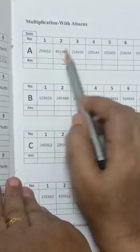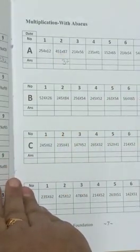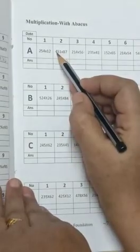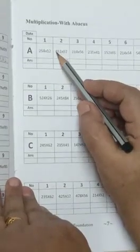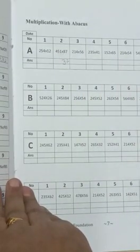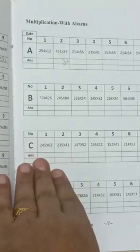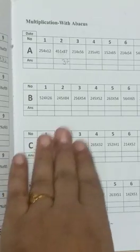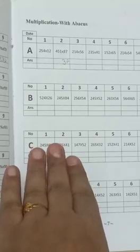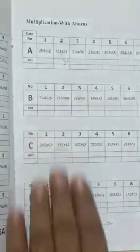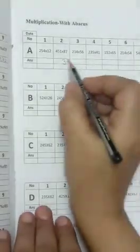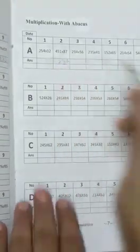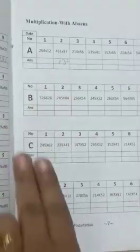So 5 into 8. 8 fives are 40. So 7 into 4. 7 fours are 28. So 40 plus 28 is 68. 68 plus 4 is 72. We will write down 2 and 7 carry forward.